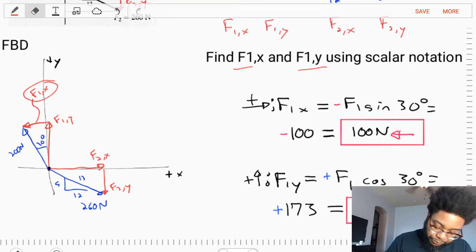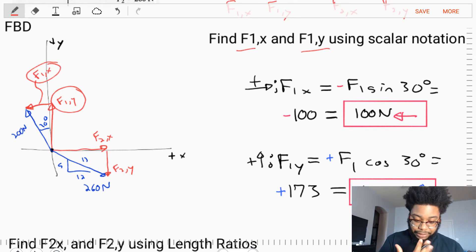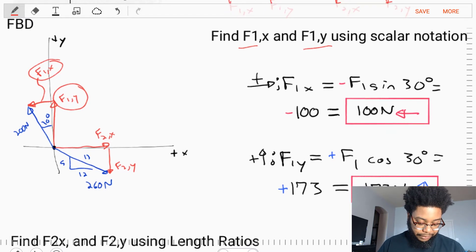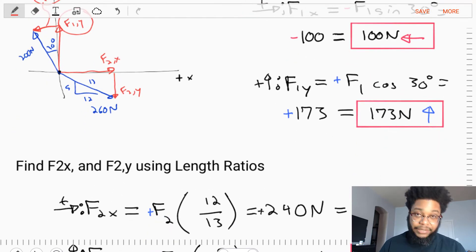Let's continue the same process and find the F1Y component. This Y component is kind of adjacent. Let's say it's an adjacent component. It's directed upward, so we'll say positive F1 times the cosine of 30 degrees. We plug our numbers in, put it in our calculator. We find the F1Y component is equal to 173 newtons. We found F1X, F1Y.